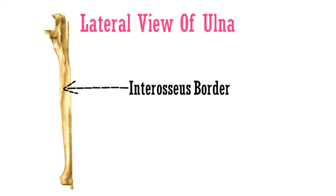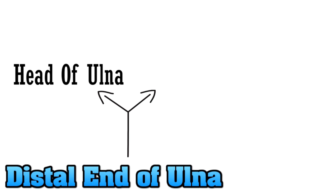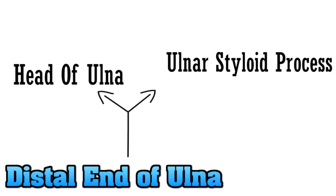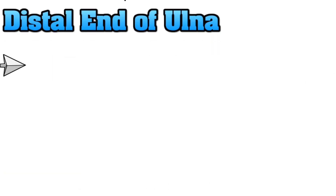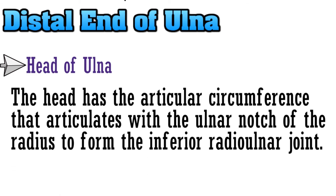This completes the shaft of the ulna. The last part is the distal end, which is formed by the head of ulna and the ulnar styloid process. The head of ulna has an articular circumference that articulates with the ulnar notch of the radius to form the inferior radio-ulnar joint.